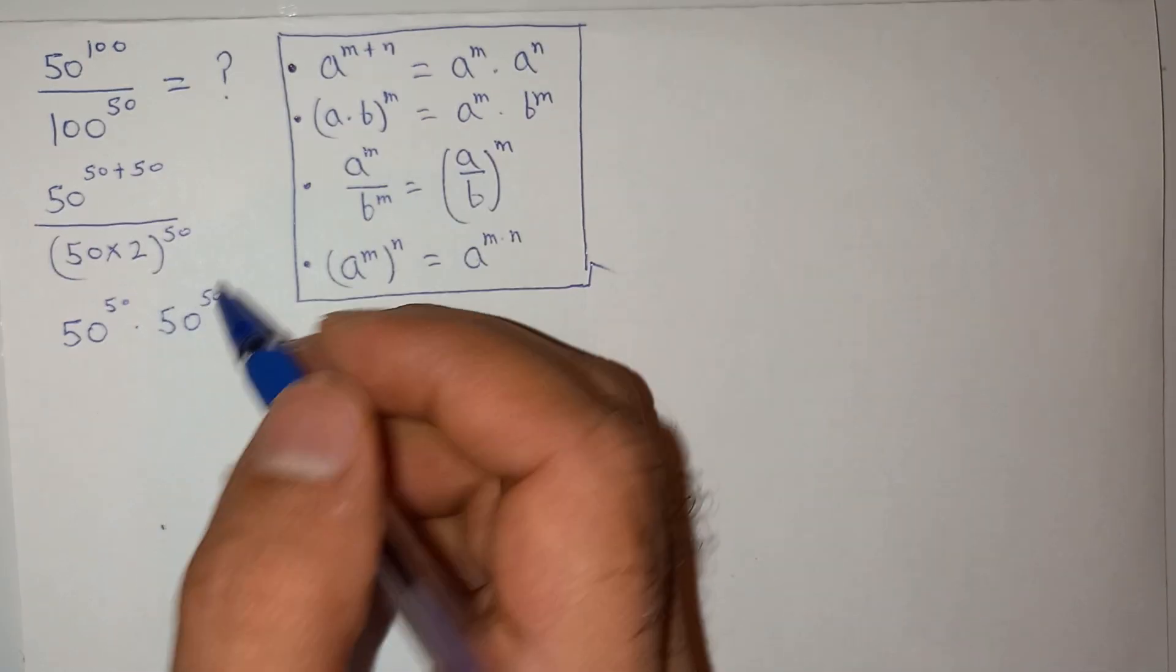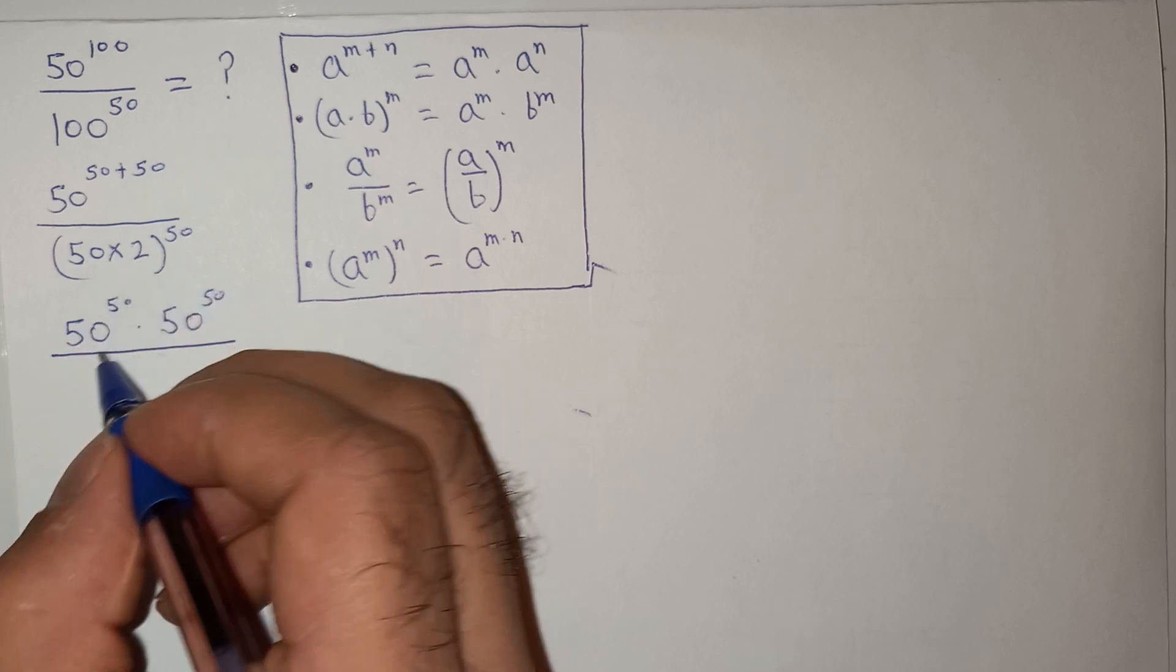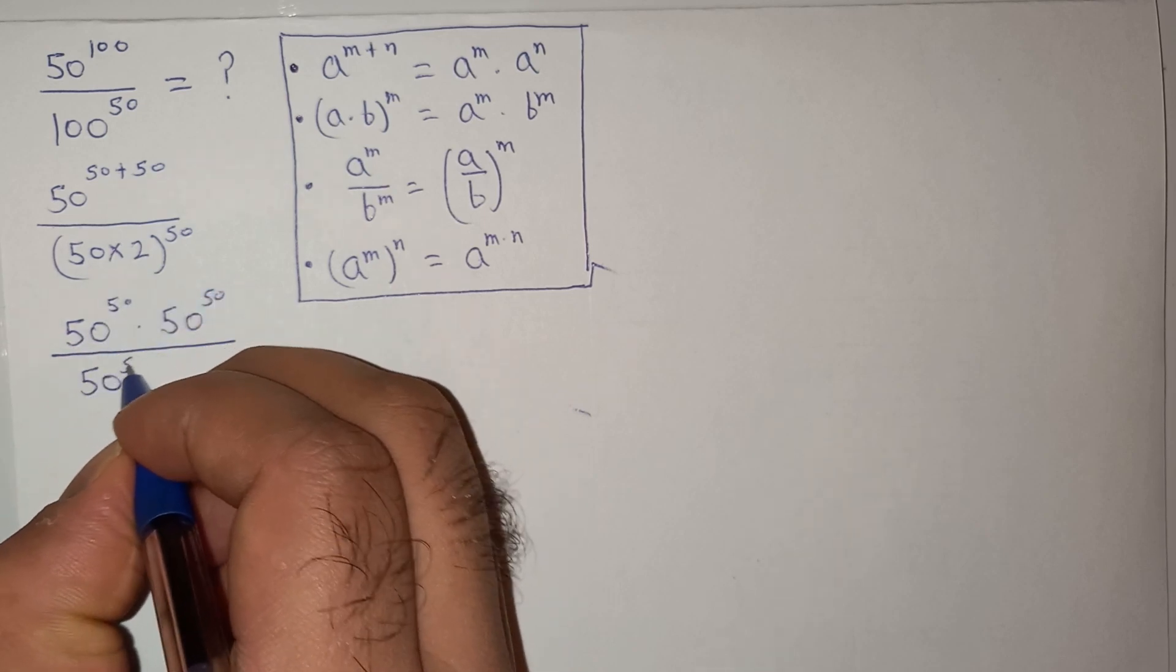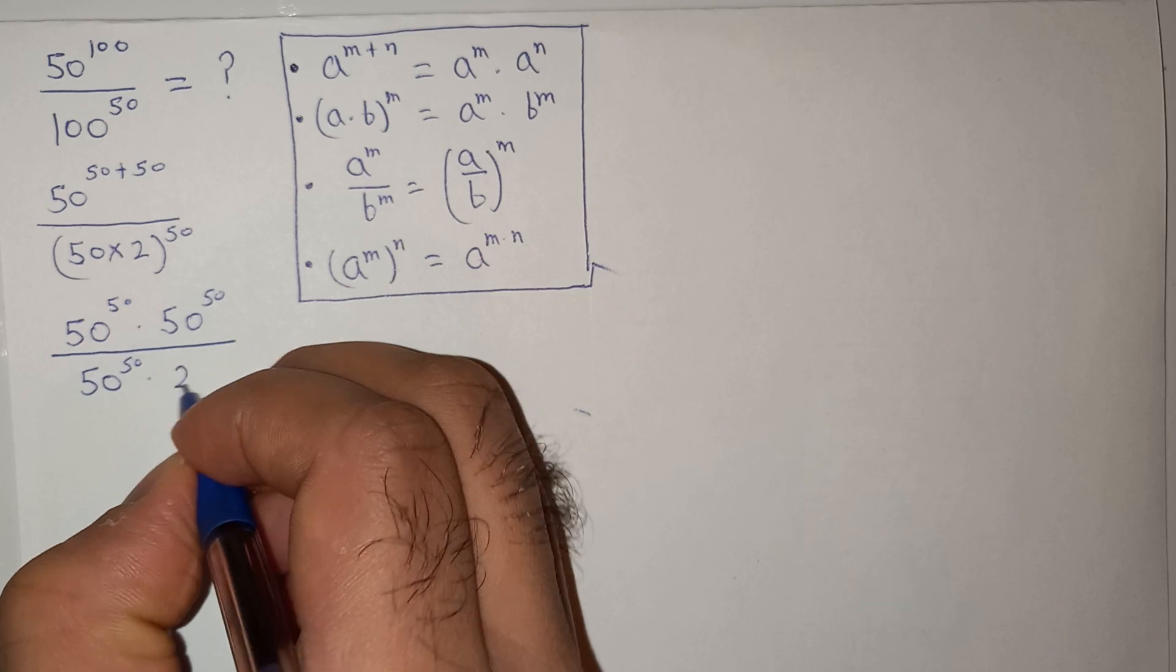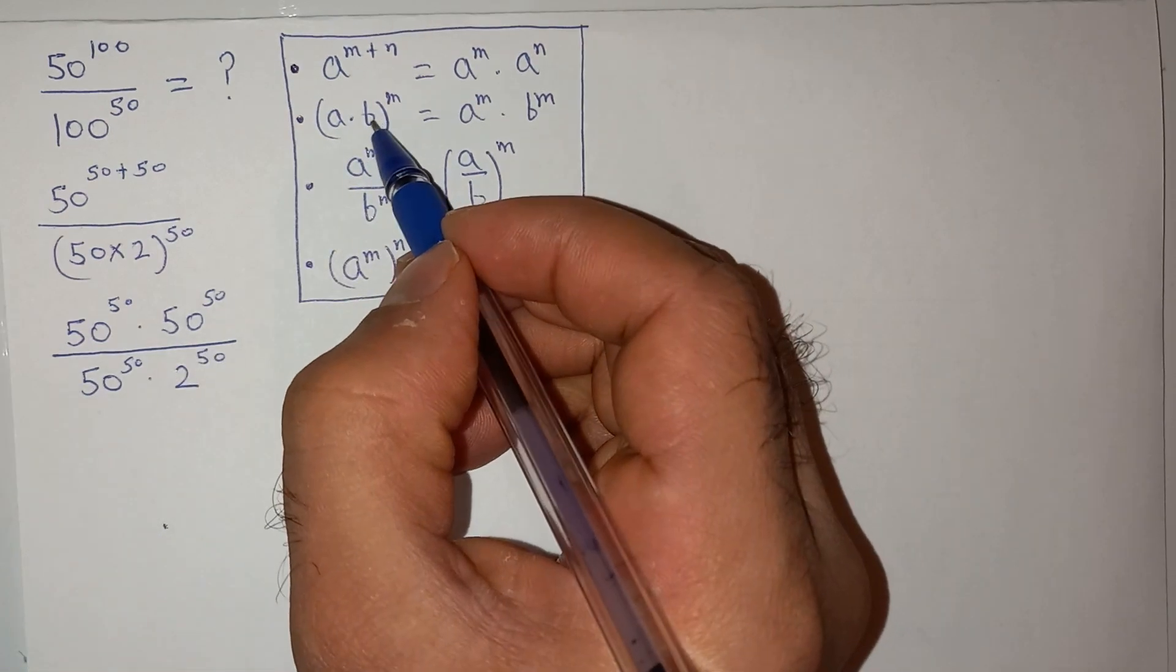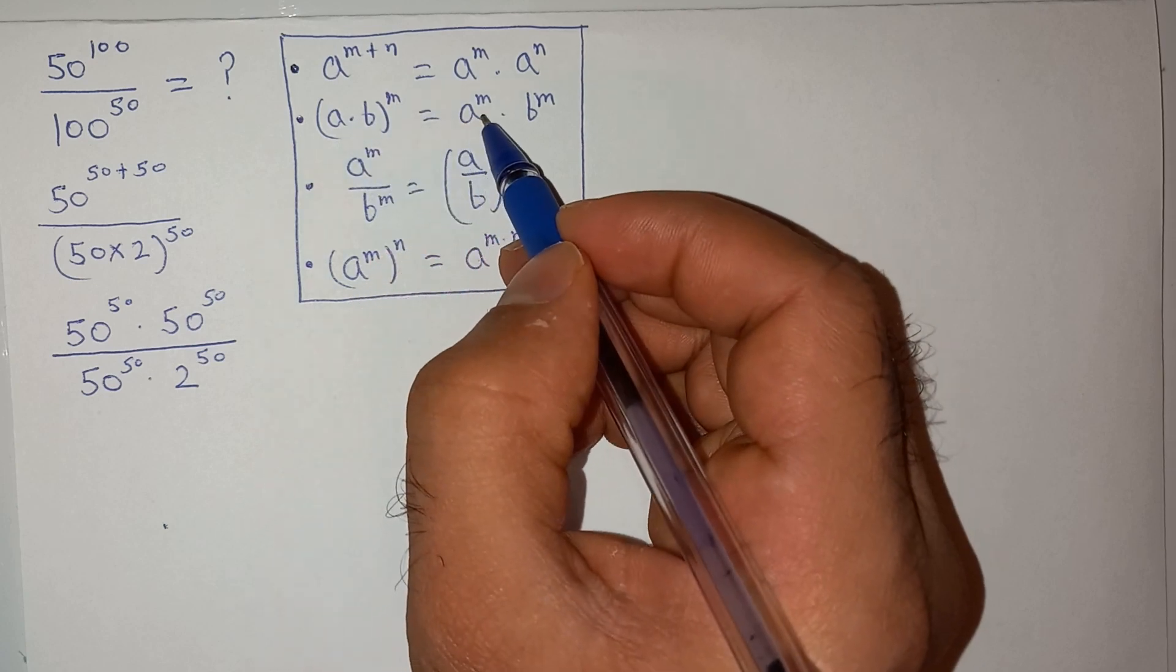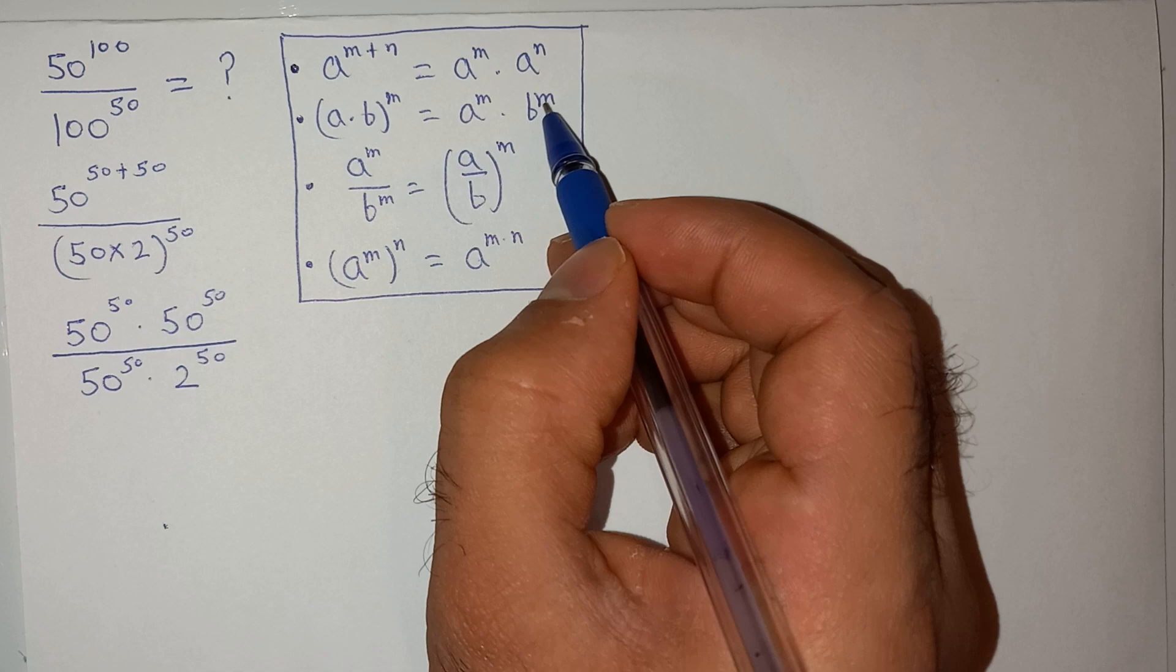Then divided by, I can write this as 50 power 50 multiplied by 2 power 50. I have used this exponential rule: a times b power m equals a power m multiplied by b power m.